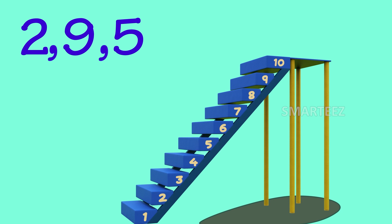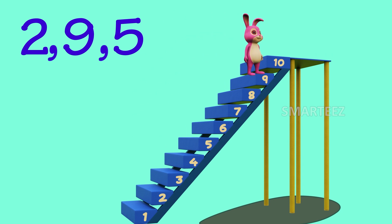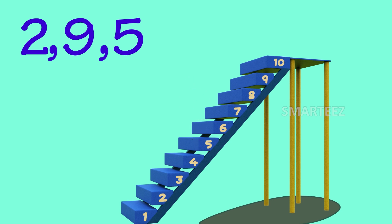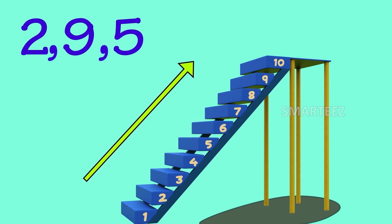Are these numbers in ascending order? Let's see the jumps. Now you can see there was a jump up from 2 to 9 before a jump down to 5.